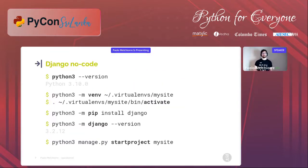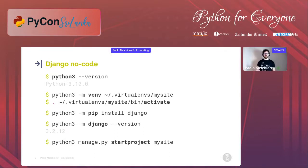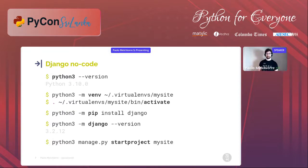To create a Django project I use the latest Python 3 stable release, create and activate a virtual environment, install the latest Django LTS version, and then using the Django startproject command I create the basic files of our project. Let's see what it takes to add PostgreSQL to this newly created project.